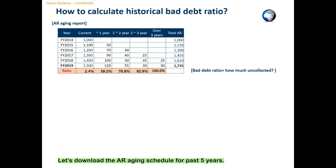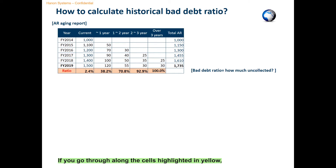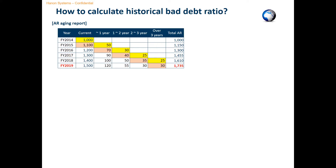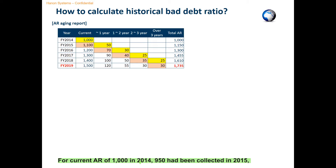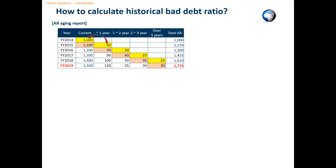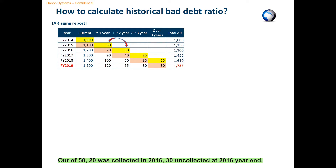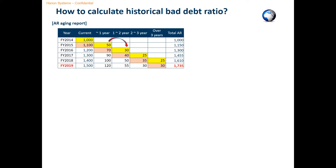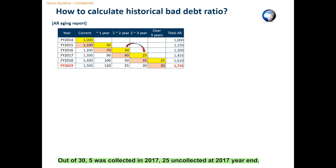Let's download the AR aging schedule for the past 5 years. If you go through the cells highlighted in yellow, you'll understand how much was uncollected eventually. For current AR of 1,000 in 2014, 950 had been collected in 2015, but 50 was still uncollected at 2015 year-end. Out of 50, 20 was collected in 2016, leaving 30 uncollected at 2016 year-end. Out of 30, 5 was collected in 2017, leaving 25 uncollected at 2017 year-end.